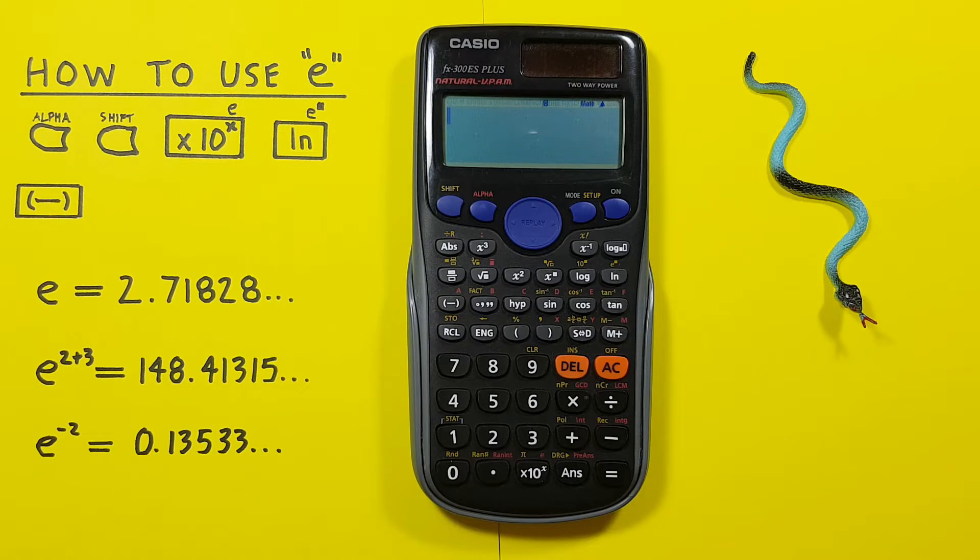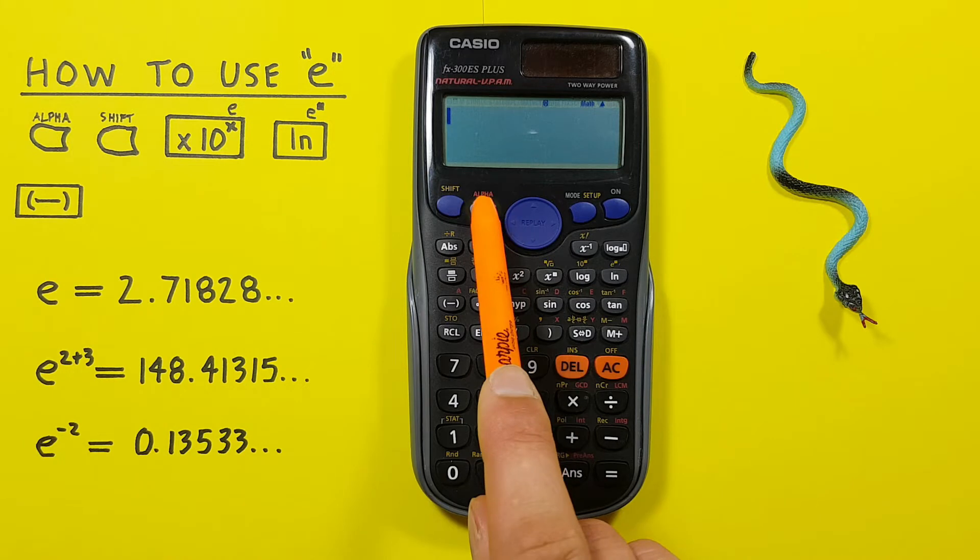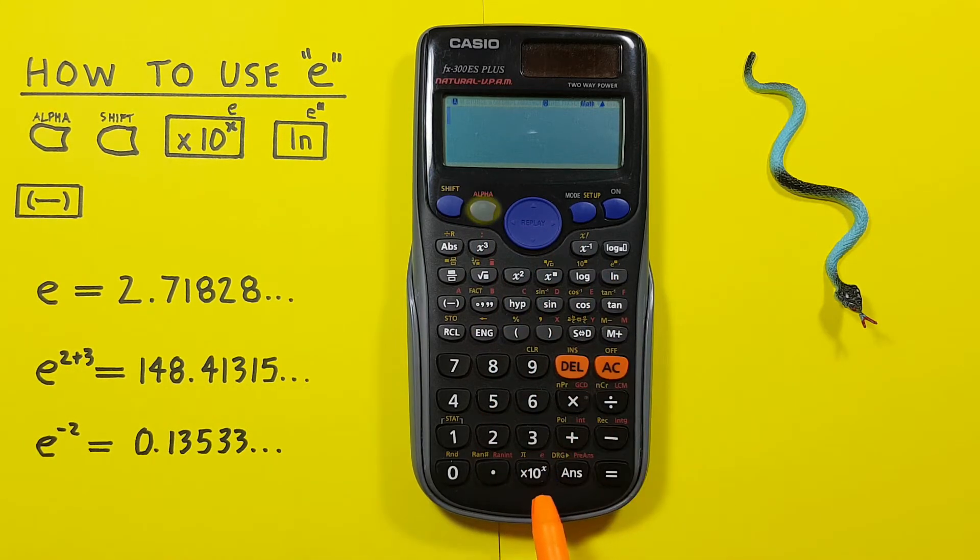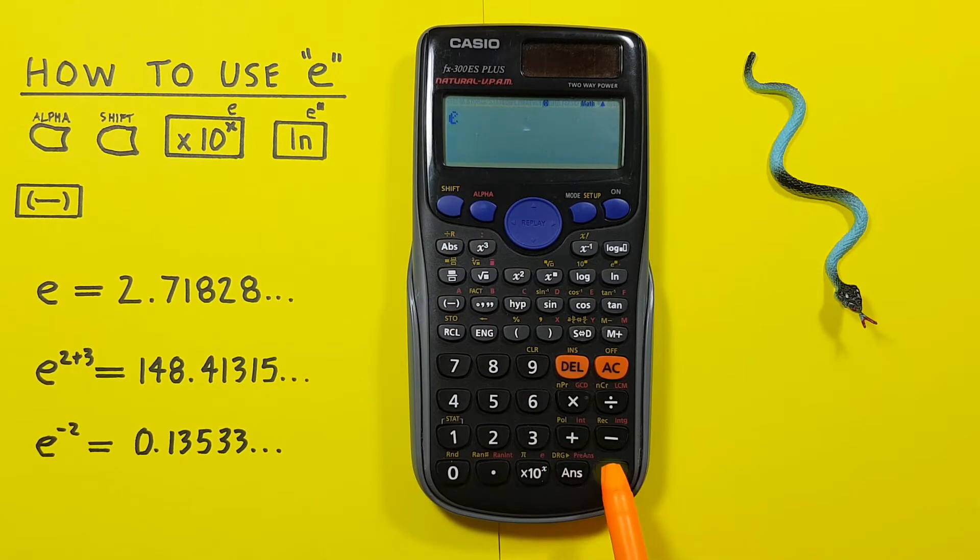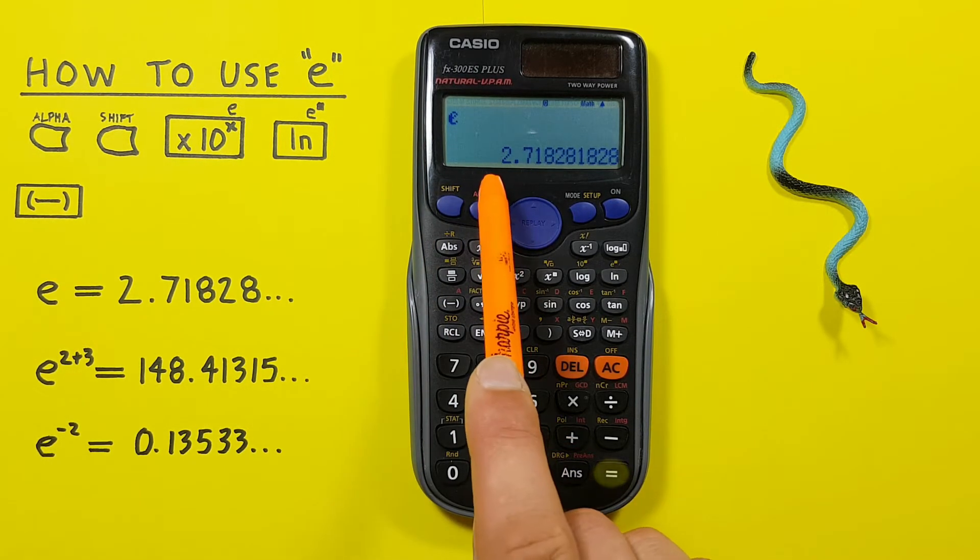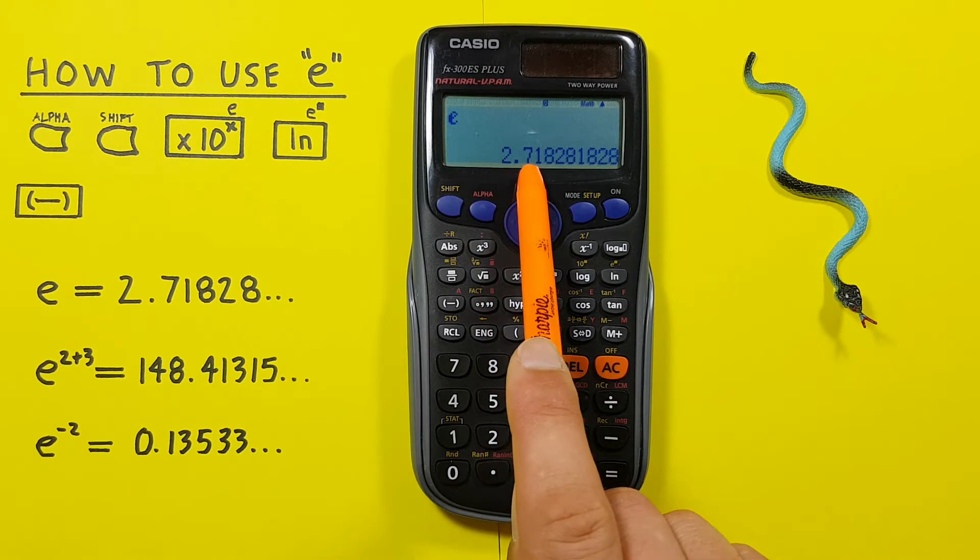If we just want to get the constant E or Euler's number, what we have to do is press the alpha key and then the times 10 to the power of X down here and that will put E on our screen. If we press equals, we see that's equal to 2.71828, etc.